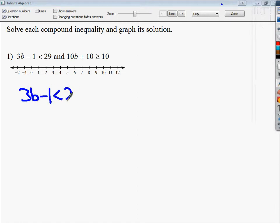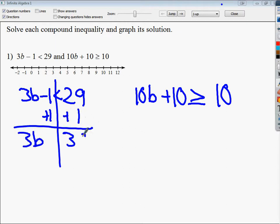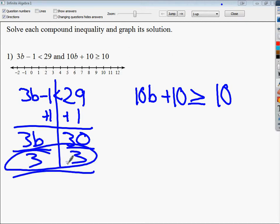Anyway, 3B minus 1 is less than 29. And 10B plus 10 is greater than or equal to 10. So, I'm going to draw my line. If you're watching this video, you're probably to the point you don't need me to go through these steps. If you do, I've got some other videos that are a little earlier in the set than this. The big deal here, of course, is I divide it by a positive. So, I don't need to flip this over. I just bring B down. B is less than 10.